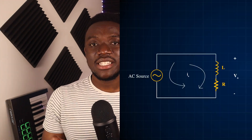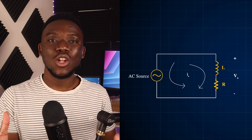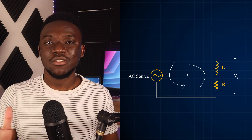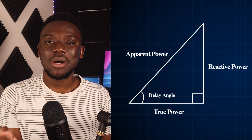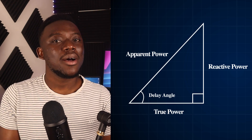A much more technical way of understanding apparent power is using the power triangle. Going back to the circuit, let's add a resistor in series with the inductor to make the load both reactive and resistive. The power triangle is a right-angle triangle that links up apparent power, reactive power, and true power. As we can see here, we can use Pythagoras' theorem to find the magnitude of the apparent power S.